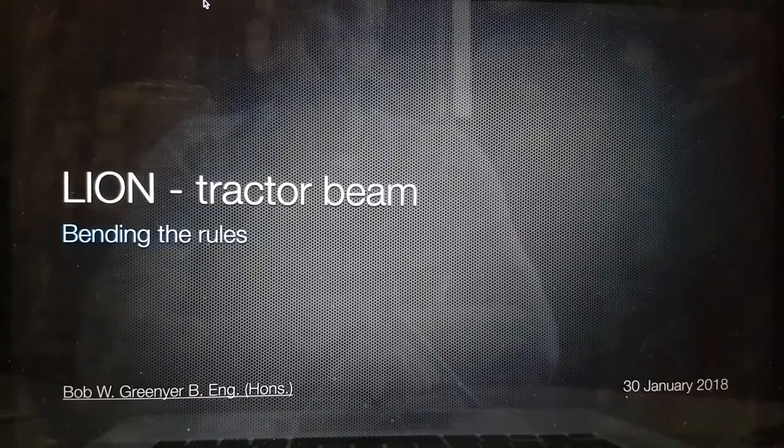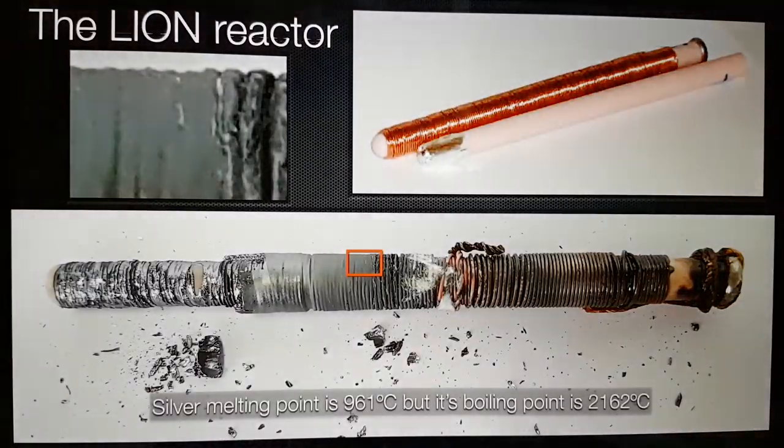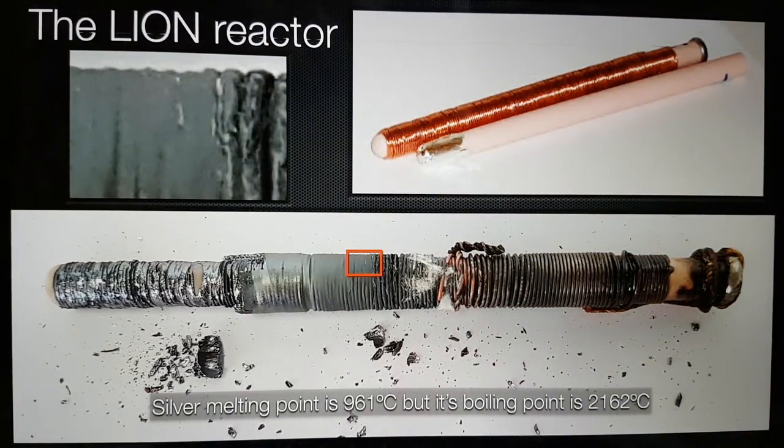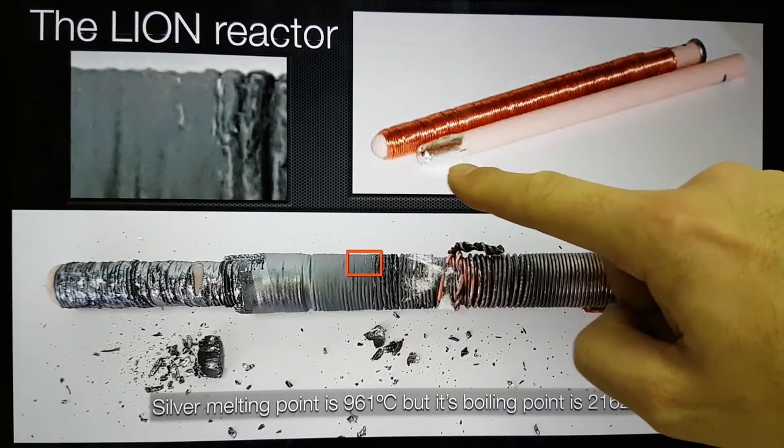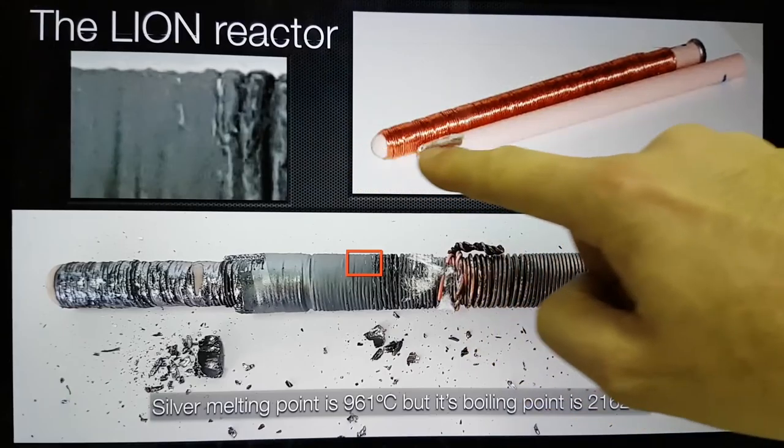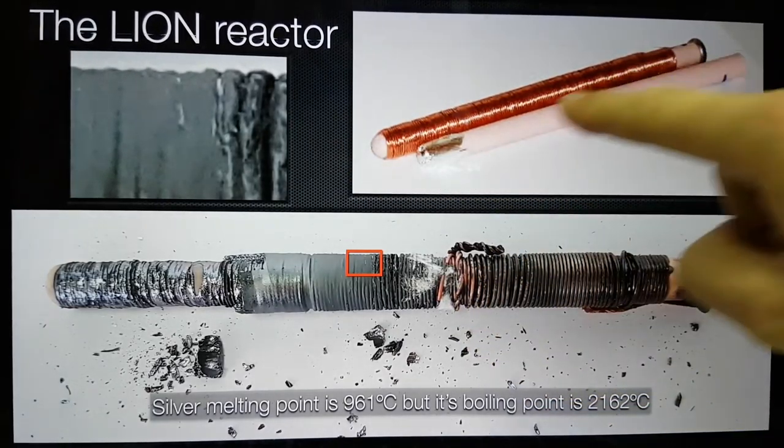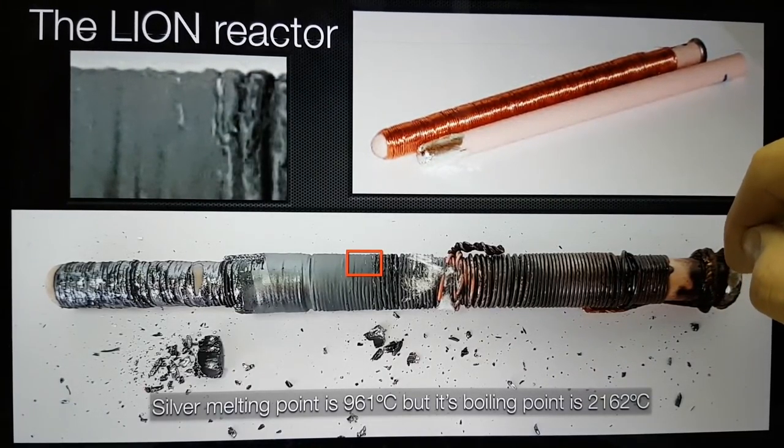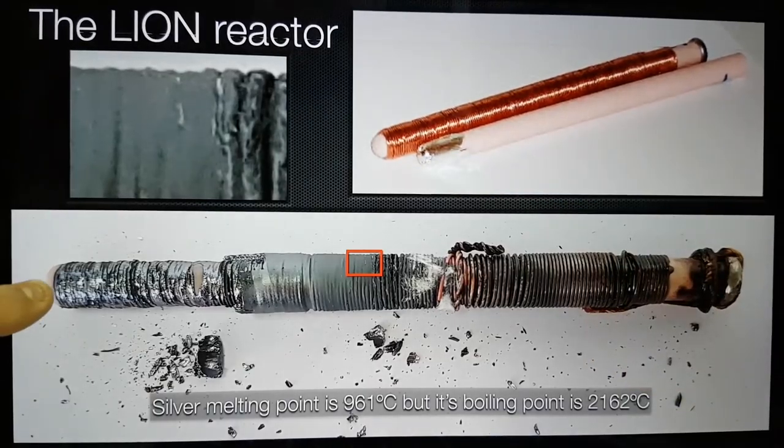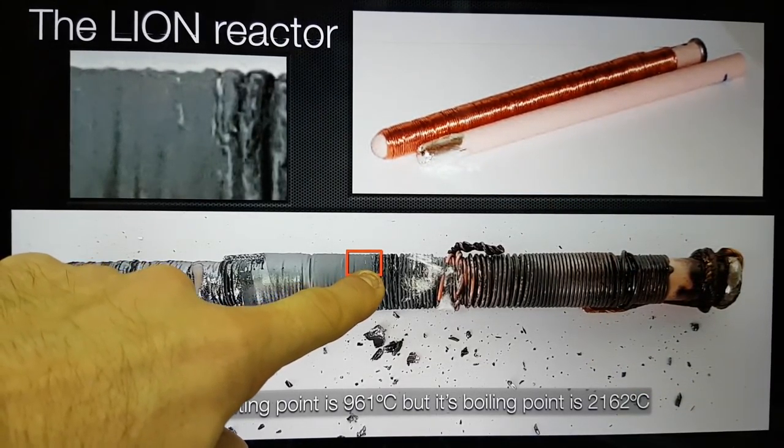So this is Lion Tractor Beam, Bending the Rules. As someone pointed out on the forum called Stephen, he noticed that the silver that was placed under the wound copper here, and this is two layers of magnet wire, as we described in Mining Diamonds with Lion, this silver is basically not here and it had migrated to here.